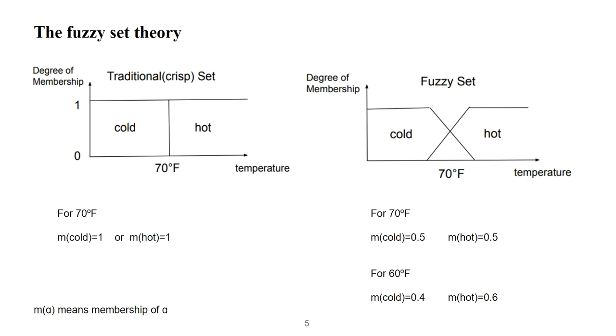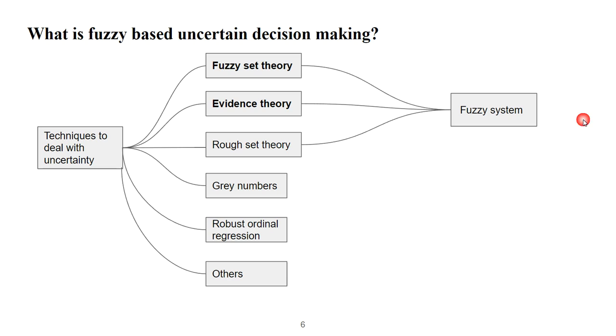However, the fuzzy set provides a gradual membership, which means that we can say 70 can belong to cold and hot at the same time in fuzzy logic, with 50% membership to each one. In another example, if we change 70 to 60, the membership of cold is 0.6 while membership of hot is 0.4.